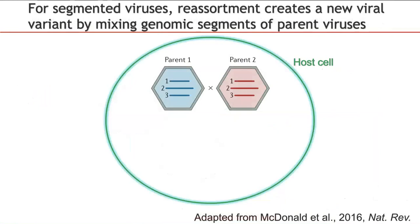However, these phylogenetic trees cannot fully capture the evolution of segmented RNA viruses, for example influenza or Lassa virus. Their genome is comprised of several distinct RNA molecules called segments, and during co-infection of the host cell, they are able to exchange these genetic segments during a process called reassortment.